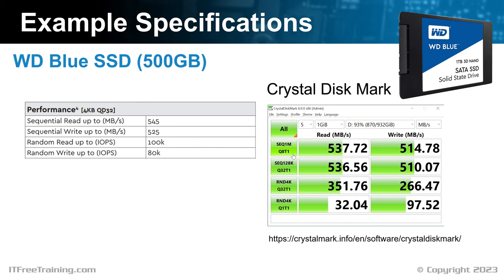The read gave a result of 537 megabytes per second, compared to 545 megabytes per second quoted by the manufacturer. The results may vary — for example, I ran it once and got a result of 548 megabytes per second, which is higher than that quoted by the manufacturer. Getting a result higher than the manufacturer's specification is rare. Results can vary between different runs of the software, and also depend on the hardware being used, such as the motherboard. The write result is 514 megabytes per second, a little down from the 525 megabytes per second quoted by the manufacturer. The results should be pretty close if you are running the tests correctly.